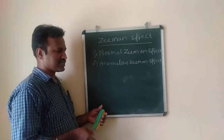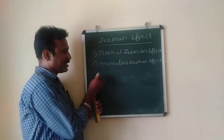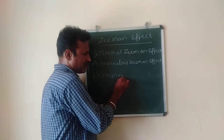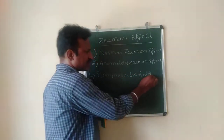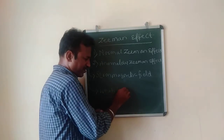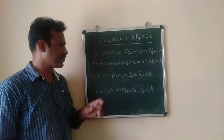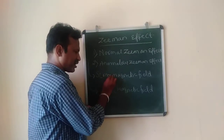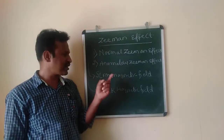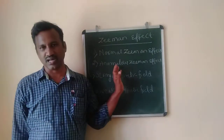In case of normal Zeeman effect, if the splitting up of the spectral line takes place in a strong magnetic field, then that is known as the normal Zeeman effect. And if the splitting of the spectral line takes place in a weak magnetic field, then such type of Zeeman effect is what we call the anomalous Zeeman effect. So if there is splitting in a strong magnetic field, it is normal Zeeman effect; if the source is kept in a weak or ordinary magnetic field, that is the anomalous Zeeman effect.